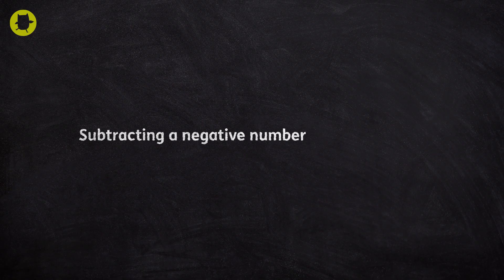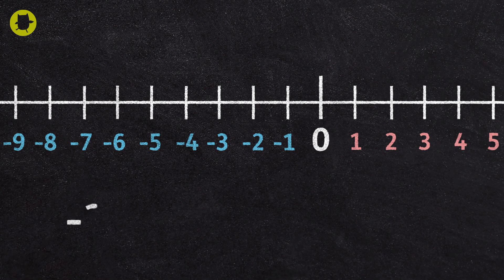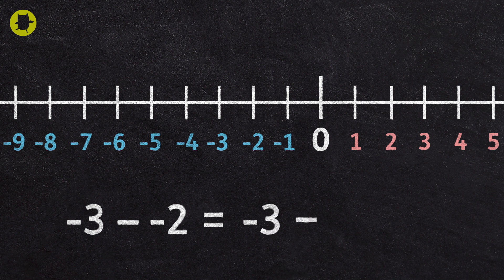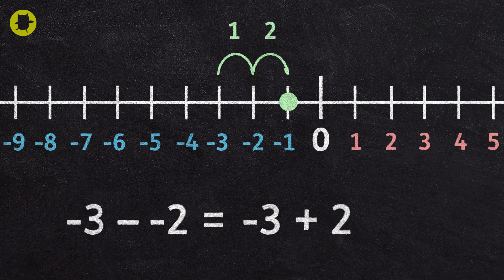When we see a minus sign followed by a negative sign, we turn the two signs into a plus sign. Instead of subtracting a negative, we add a positive. So minus negative two becomes add two. This is now an addition problem. Negative three subtract negative two equals negative one.